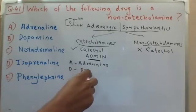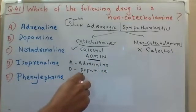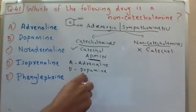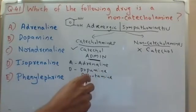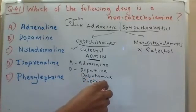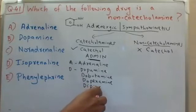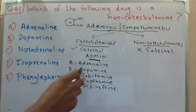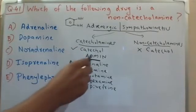Dopamine also contains the catechol nucleus. Other drugs starting with D that also contain the catechol nucleus include dobutamine, dopexamine, and dipivefrin — which is a pro-drug of adrenaline. So all these D drugs — dopamine, dobutamine, dopexamine, and dipivefrin — contain the catechol nucleus.